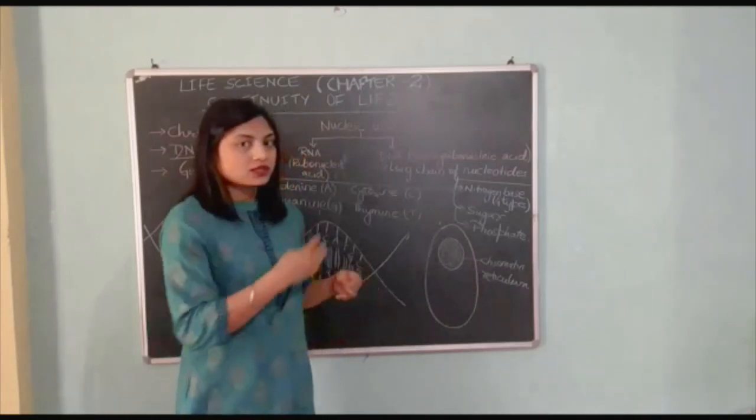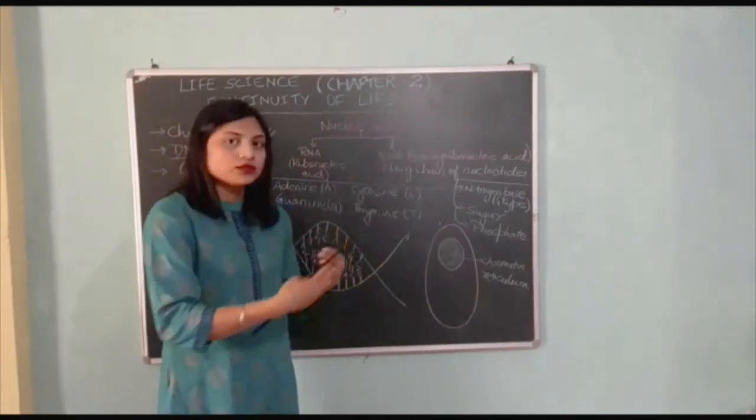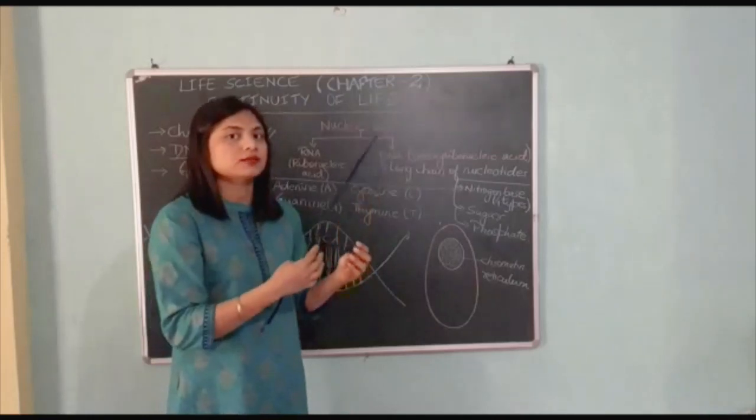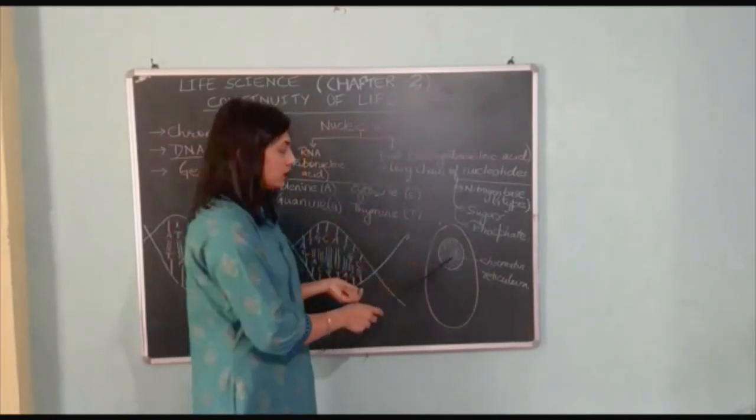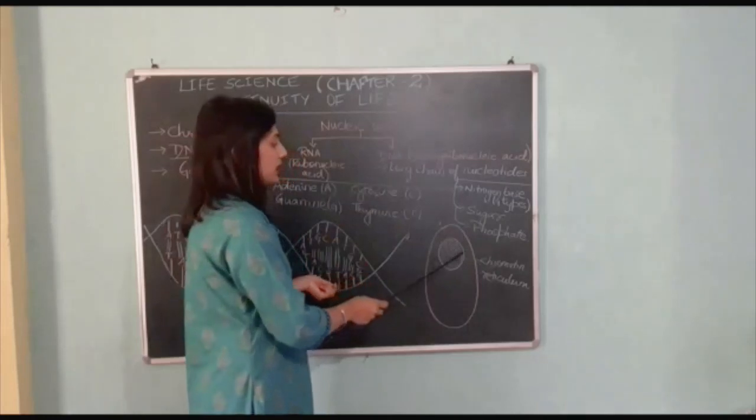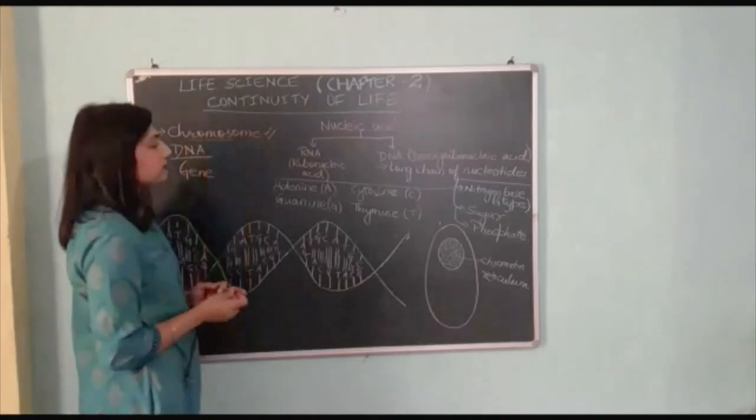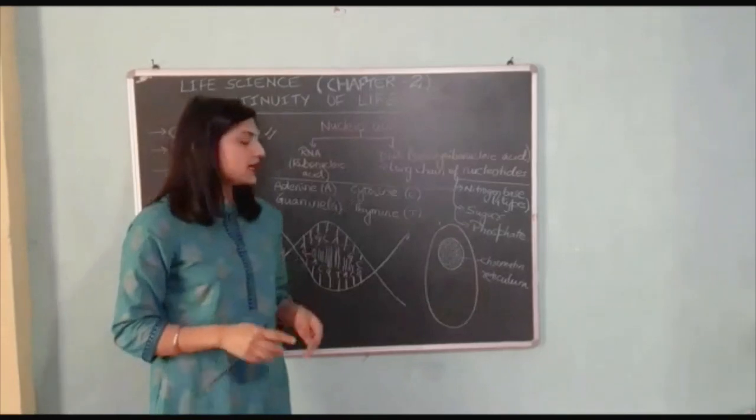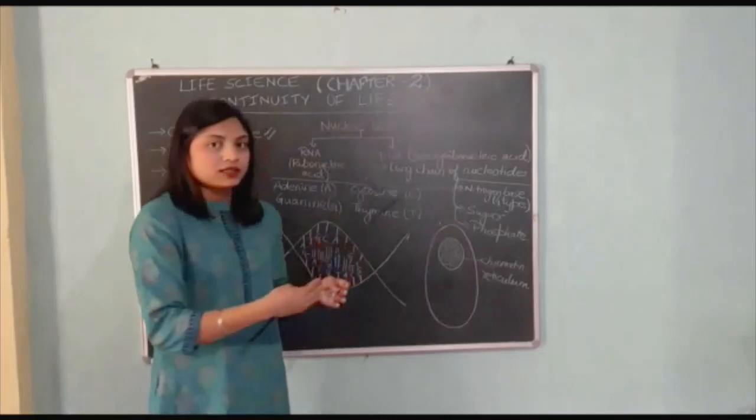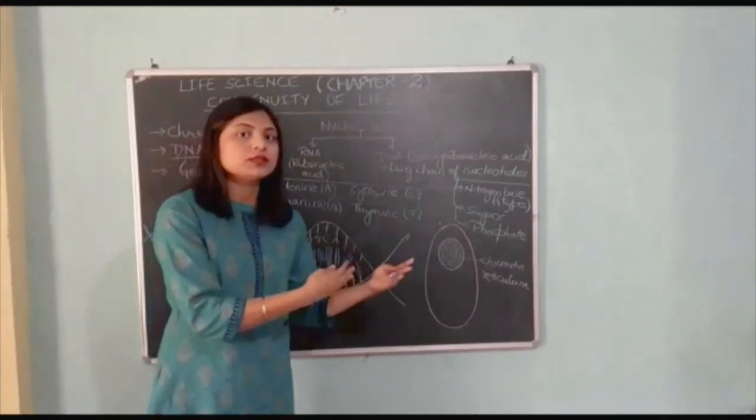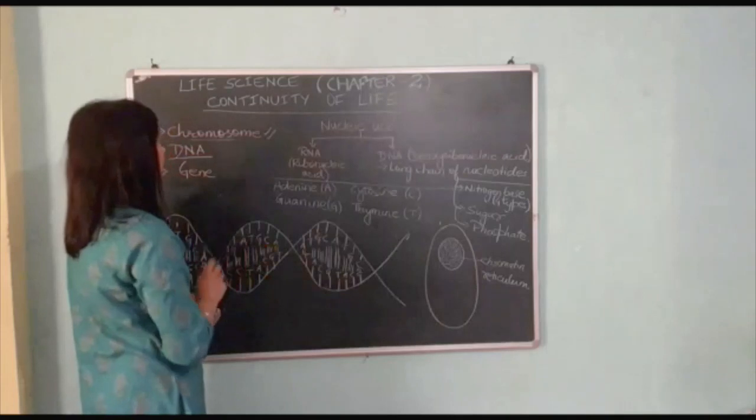When the cell is in division stage, at the time of reproduction, the chromatin reticulum inside the nucleus, which is loosely woven DNA, is folded and tightly packed into a condensed structure. The long strand of DNA is folded tightly inside the nucleus in a simple manner.